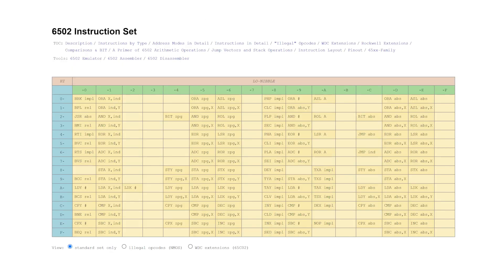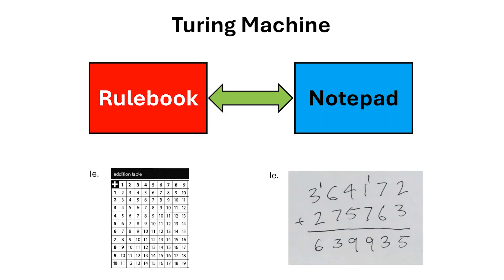With just a rulebook and a notepad, we can compute anything that's computable. That includes the instruction set that runs the 6502 microprocessor. Because at its core, a CPU is just a more optimized version of this same fundamental idea.